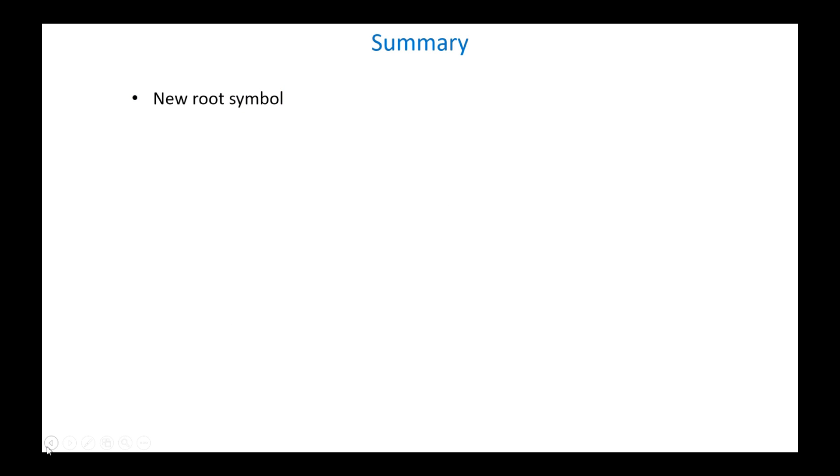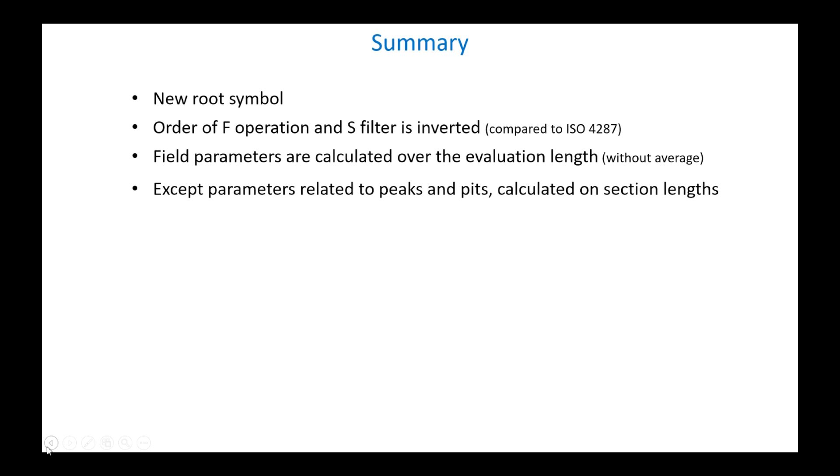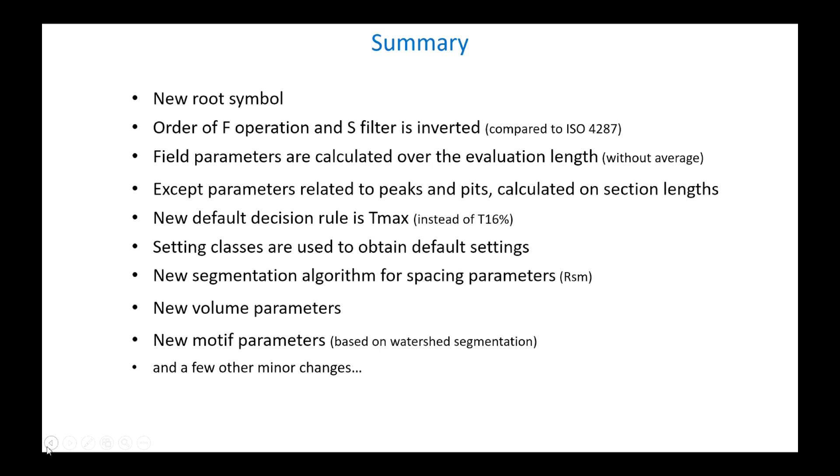To summarize, parameters defined according to the new standard are indicated with a new root symbol. The order of the F operation and the S filter is inverted compared to before, which can create differences on some profiles. Field parameters are no longer averaged over sampling lengths. However, peak parameters are still calculated as an average over section lengths. The default decision rule is now the max rule. Some parameters are associated with default settings via setting classes, and new parameters complete the range of possibilities.